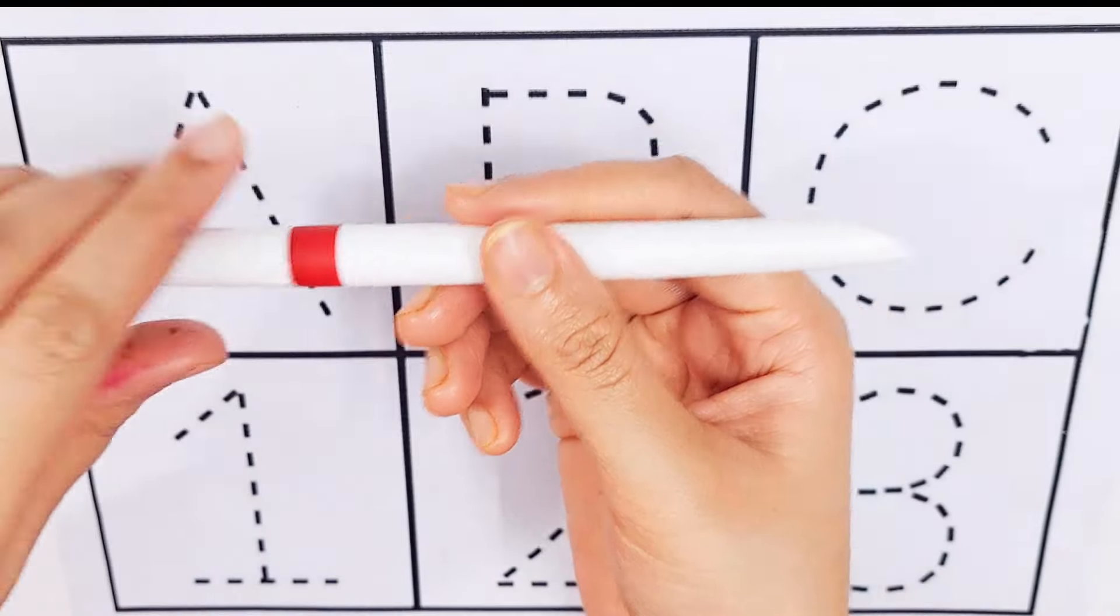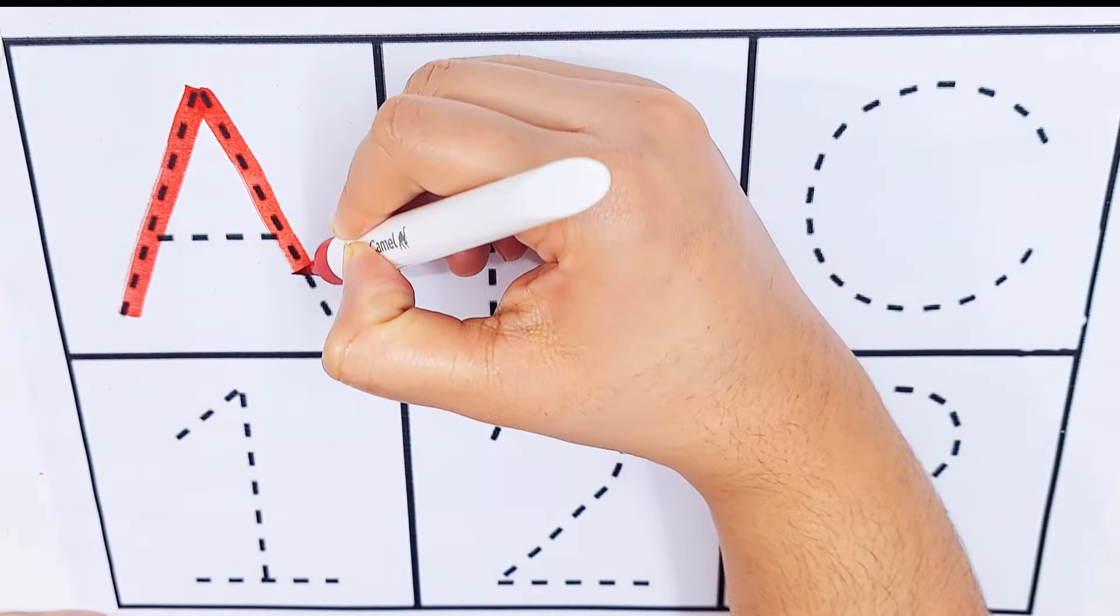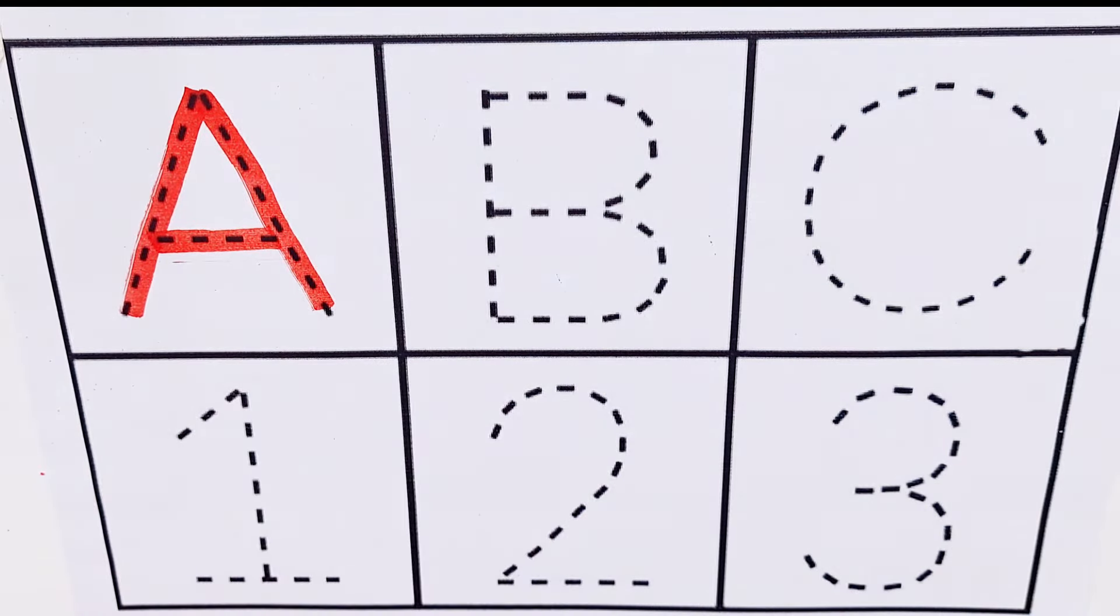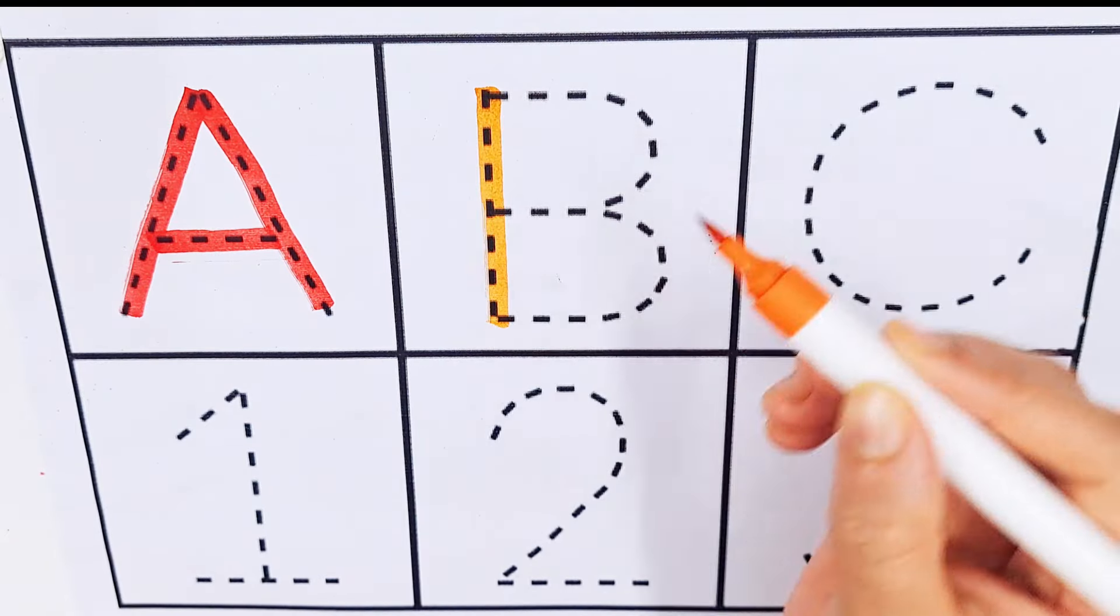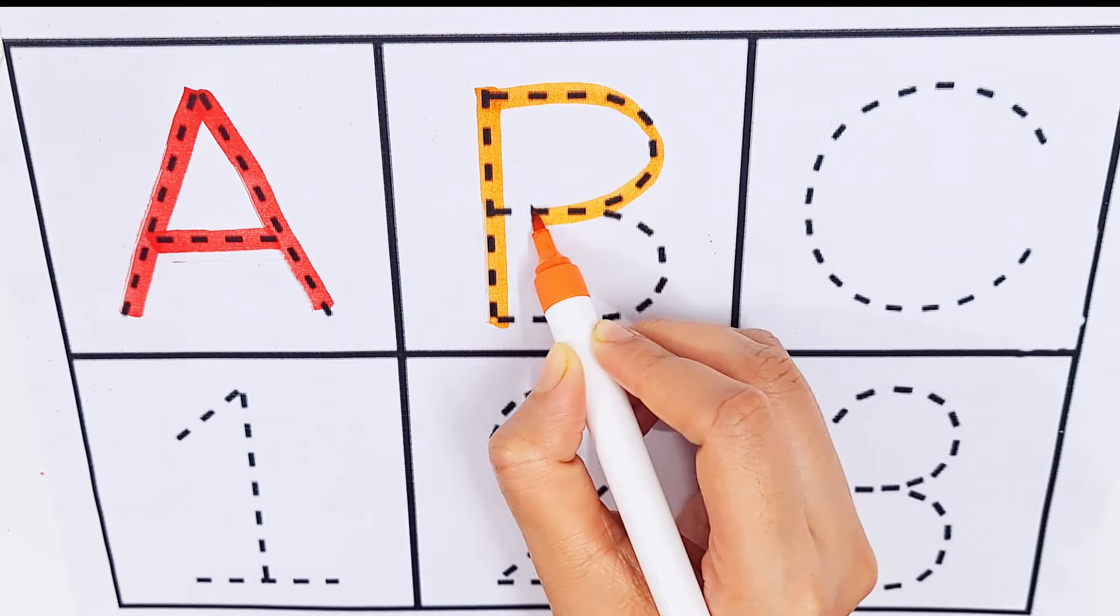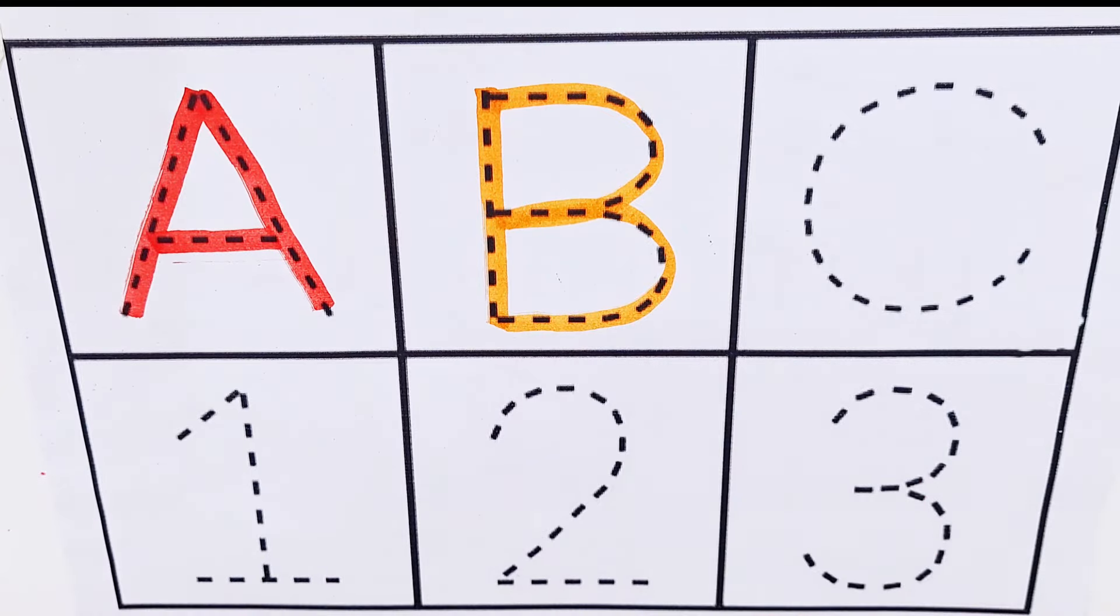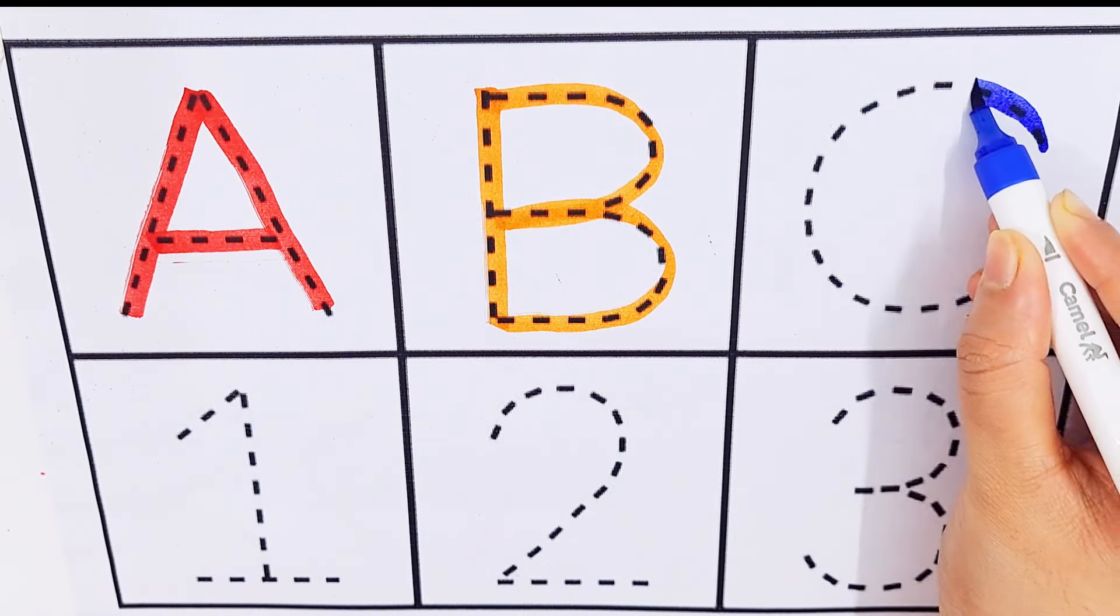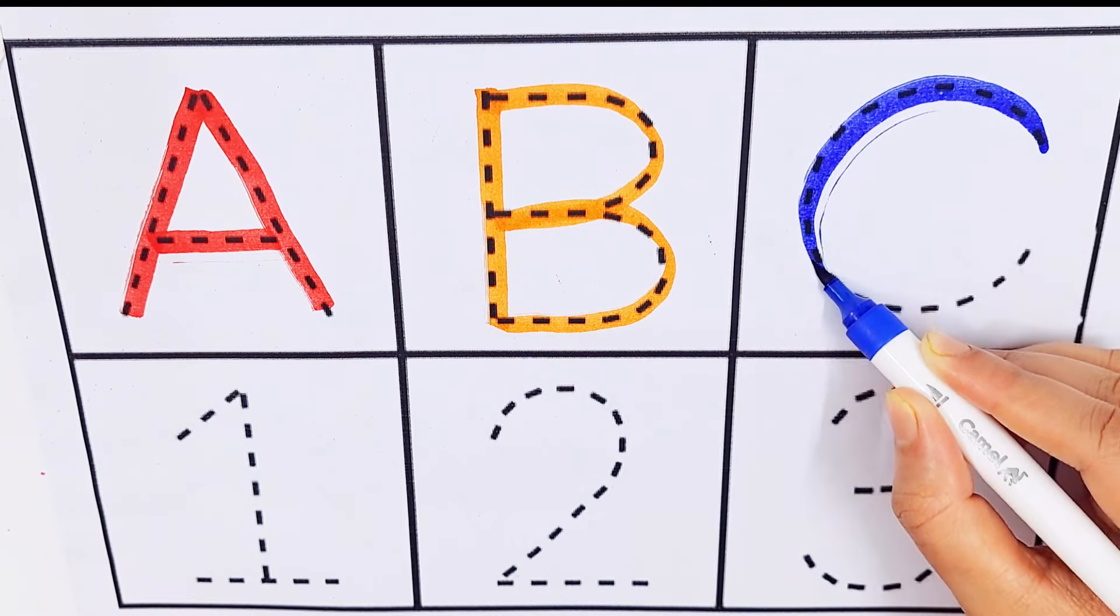Red color. A, A for avocado, A for ant. Orange color. B, B for butterfly, B for banana. Dark blue color. C, C for candy, C for candle.